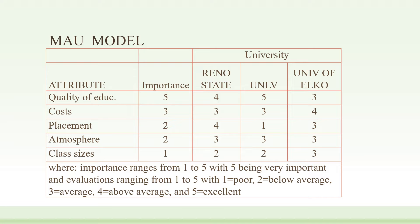The example is three universities in Nevada. As a parent and my child are trying to decide which of these schools to attend for college. The three alternatives are Reno State University, UNLV, and the University of Elko. We surveyed parents and students and asked what were the most important attributes in deciding which school to attend. They told us the five most important attributes were quality of education, cost of education, placement, the atmosphere at the university, and class sizes.